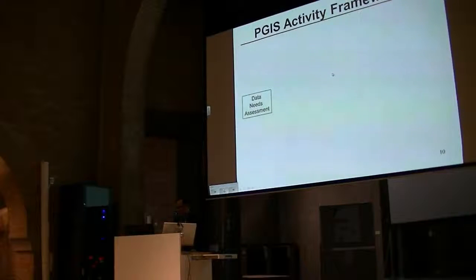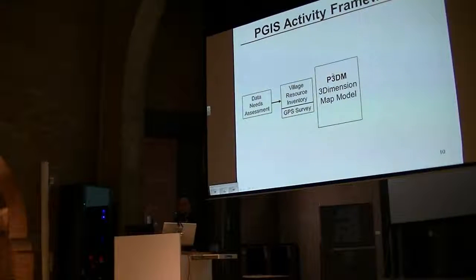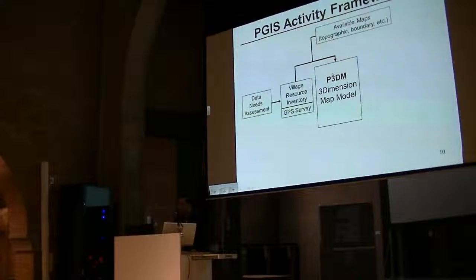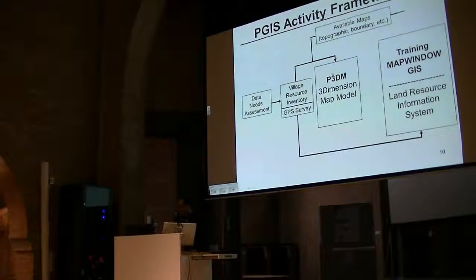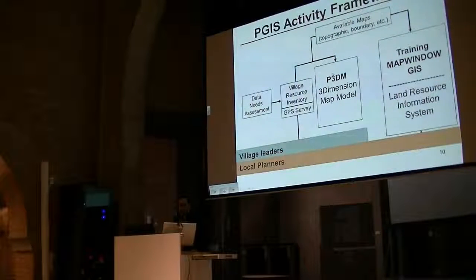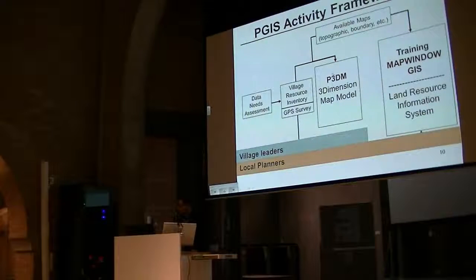In terms of the activity, we first start with a needs assessment — what does the local government need in terms of data? We do a resource inventory of the village, tie it up with a GPS survey, and build a three-dimensional map model of the area using topographic maps from the national government. We train them with the use of MapWindow, and then we build through hands-on training a land resource information system. Village leaders and some students from the local university are involved up through the three-dimensional model, while local planners are also trained in MapWindow and the building of the land resource information system.